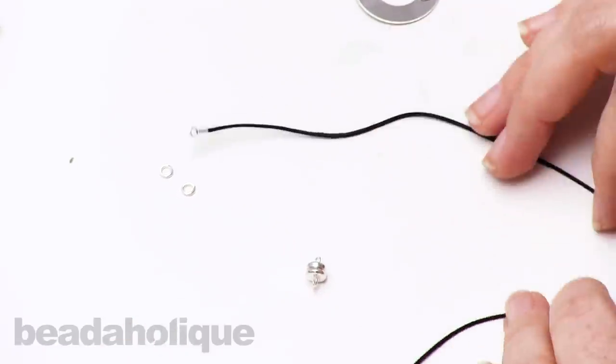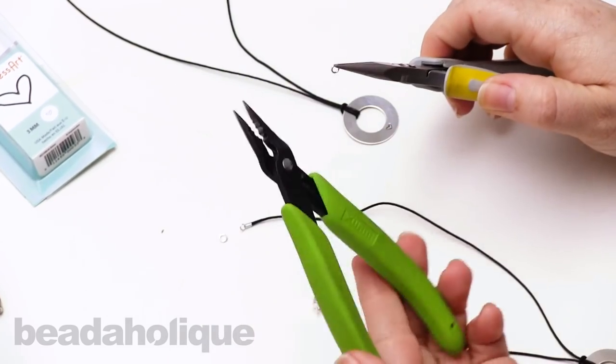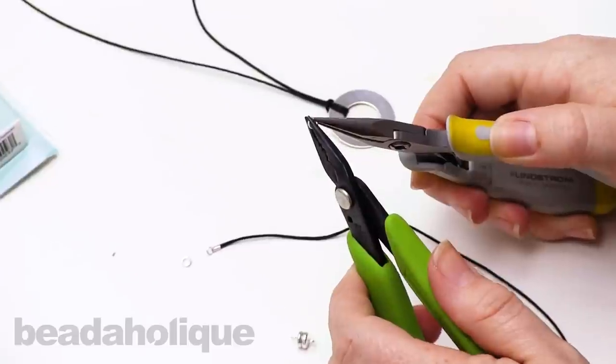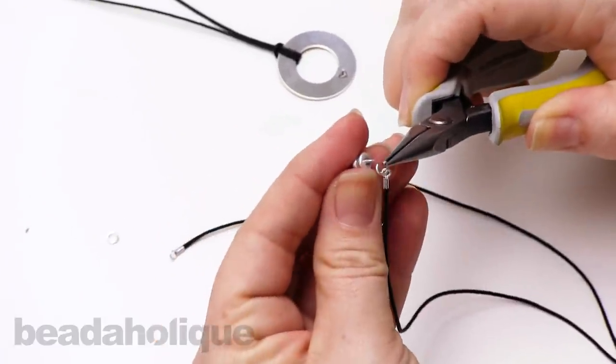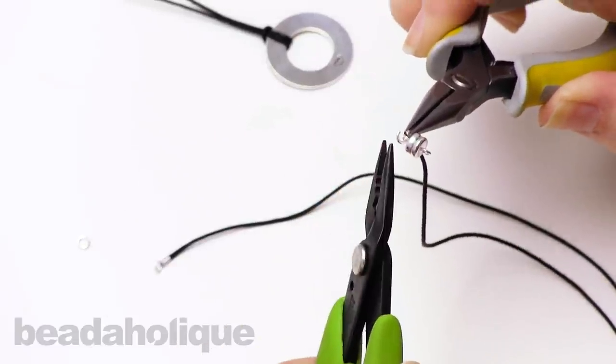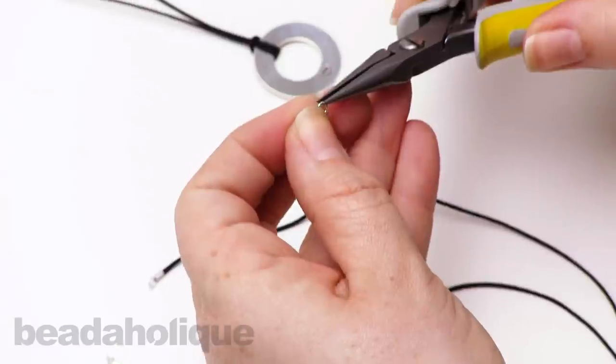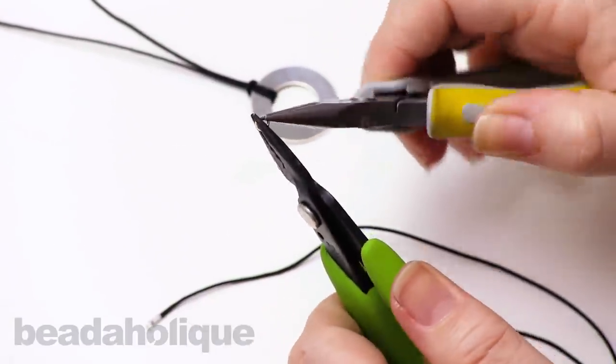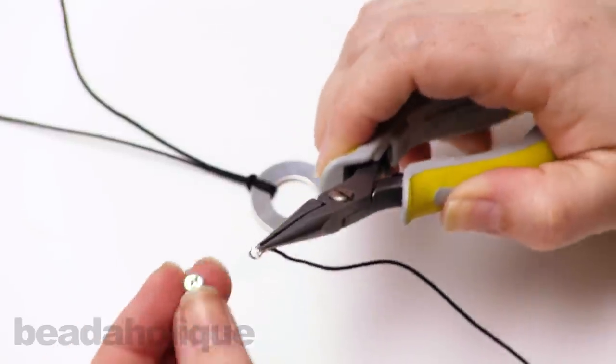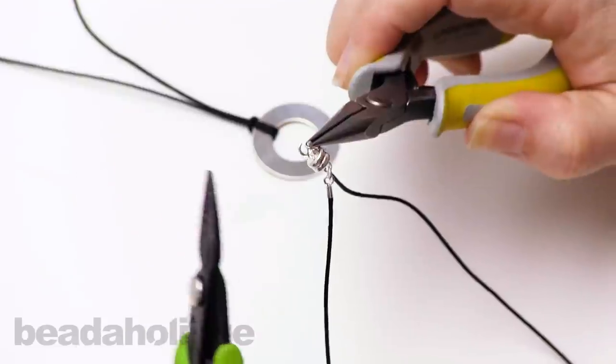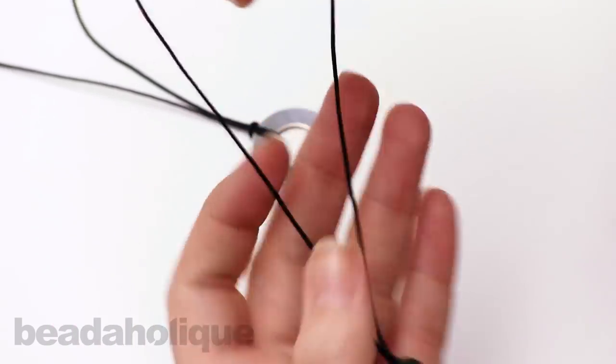So now the last part of this is we're going to take our chain nose pliers and our jump ring here. And the Xuron 4-in-1 crimping pliers also work as chain nose pliers. So I'm going to use those to help open my jump ring. Slide that onto one of the loops. And slide on one side of my magnetic clasp. And it'll nicely attach to my pliers there. Simply close up that jump ring. And now we're going to repeat on the other side. Open up that jump ring. Slide it onto your loop. And slide on the other side of the clasp. There we go. Close that up. Remove your pliers from your magnetic clasp. And you're all done.